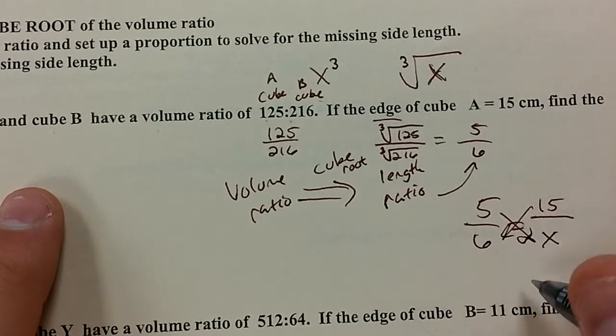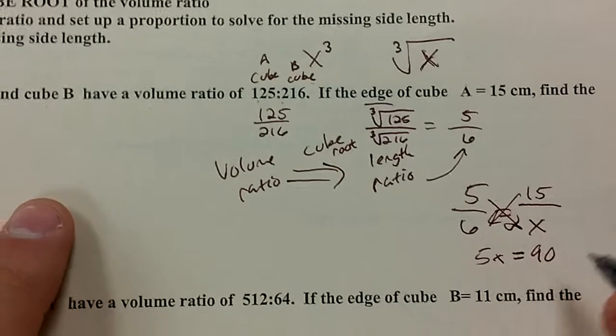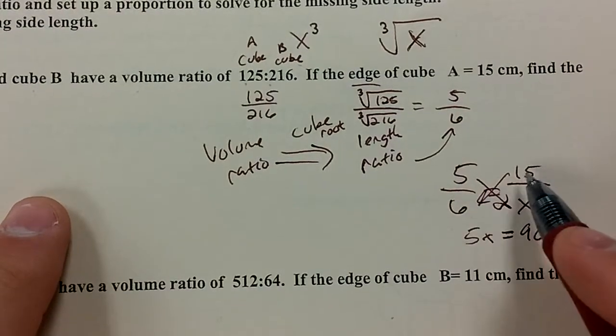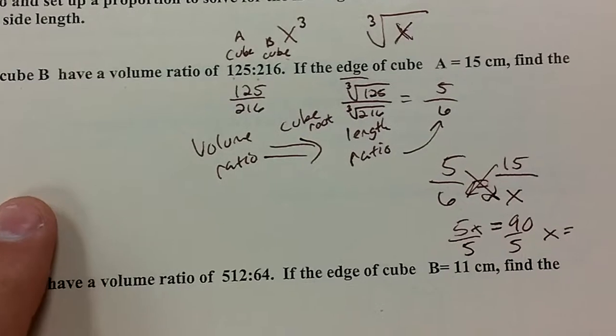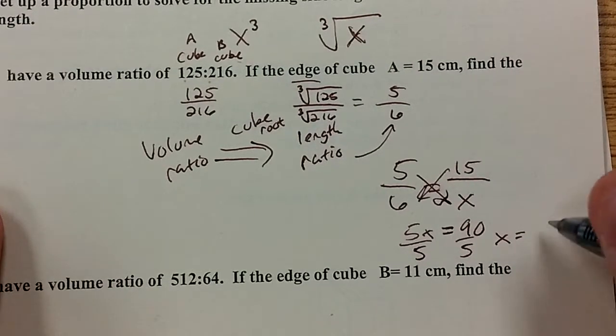I'm going to cross multiply and solve here. You have 5X equals 90, 5 times X, 6 times 15. Divide both sides by 5. X will be equal to 18.